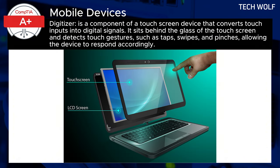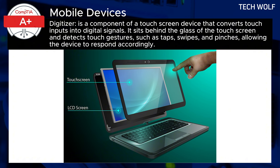Touchscreens consist of a display screen and a digitizer. The digitizer, responsible for detecting touch, translates physical gestures into digital commands, while the display provides visual feedback. This integration enhances usability but adds complexity to repairs, especially when damage occurs to either part.